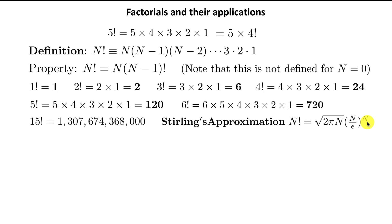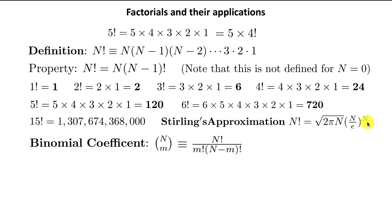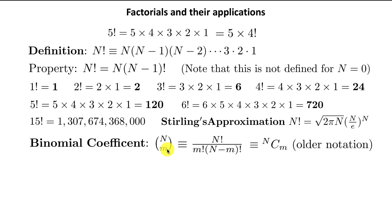Stirling's approximation is useful when dealing with something like a gas which has billions and billions of atoms. We'll now define something called the binomial coefficient, written as (n choose m). The definition is n! divided by m! times (n−m)!. The binomial coefficient is also called 'n choose m.' The older notation is nCm, and sometimes the n is placed above, but in most books the bracket notation is now used.